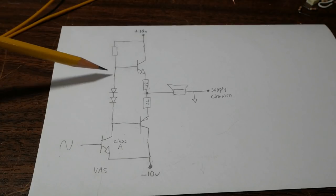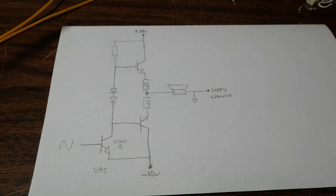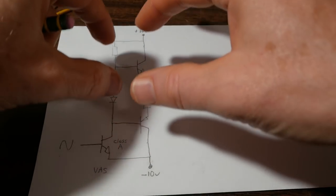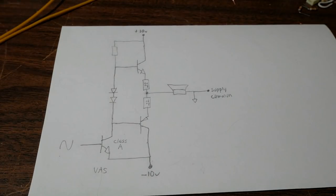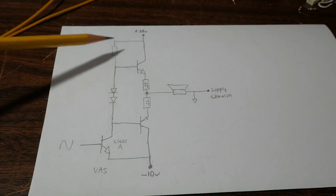So it allows this voltage to slide around easily while keeping the current constant. Now there's another way we can achieve this and that's by using a bootstrap circuit.